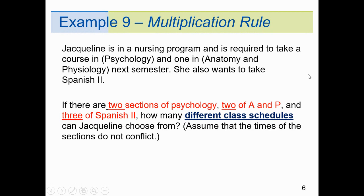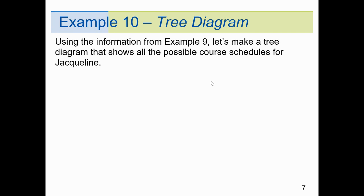Jacqueline is a nurse in a nursing program required to take a course in psychology and one in A&P, and she also wants to take Spanish 2. When she goes to register, there are two sections of psychology, two of A&P, and three sections of Spanish 2 available. The question is: how many different class schedules can Jacqueline choose from, assuming the times do not conflict? Using this information, we'll make a tree diagram — and then show you a faster way to get to the number of possible schedules.